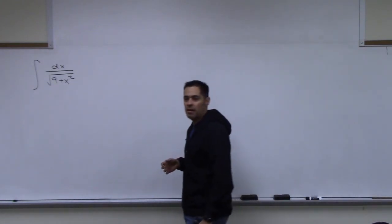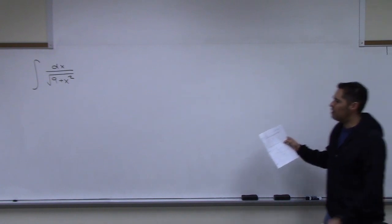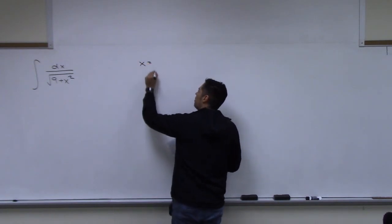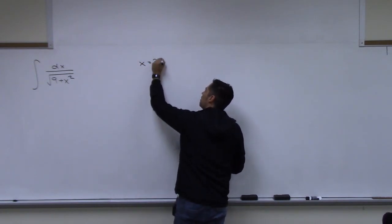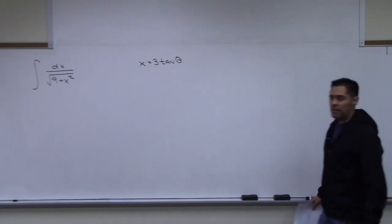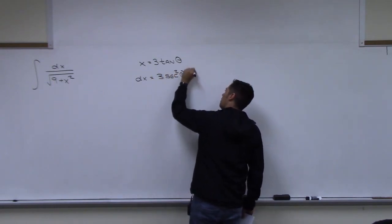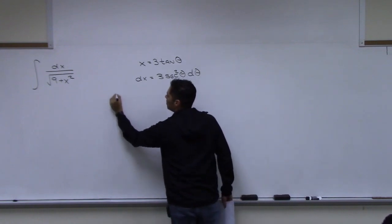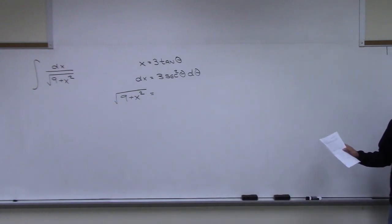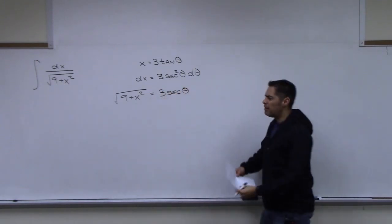The last example on the notes: the integral of dx over √(9 + x²). This looks like the a² + x² form, so we use x = a tan theta — in this case x = 3 tan theta. Taking the derivative: dx = 3 sec²theta d theta.